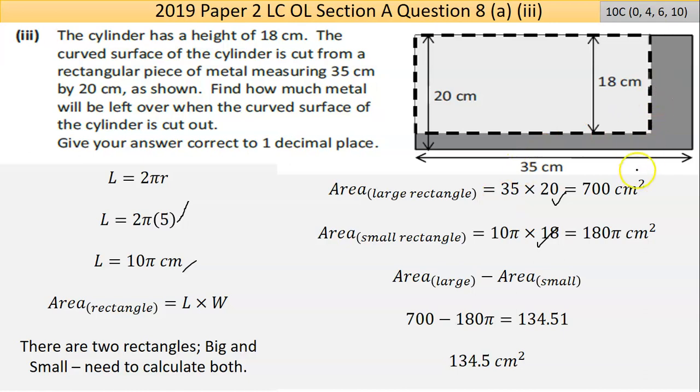So we're looking for the difference between those two. 700 take away 180π and you get an answer of 134.51. Round that to one decimal place, 134.5 cm².